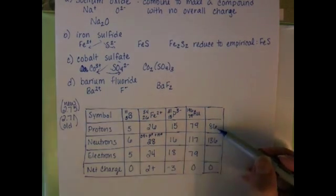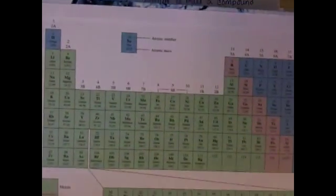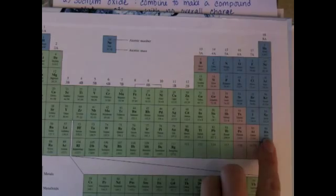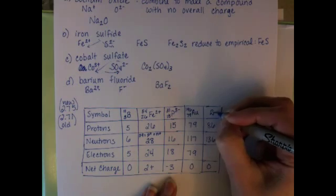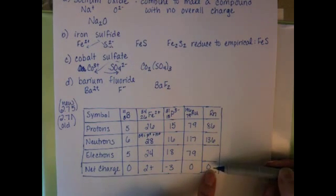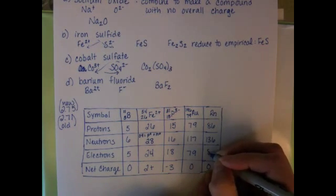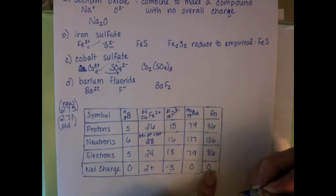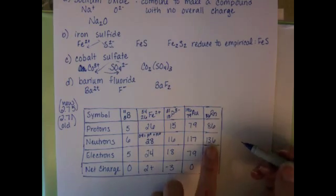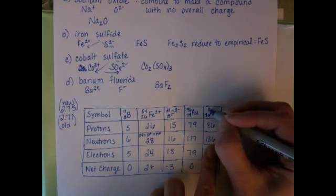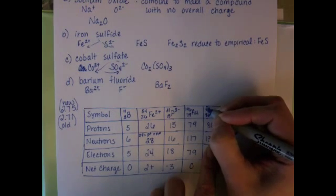And last but not least, we have 86 protons. This particular atom has a net charge of zero, which means we have equal number of protons and electrons, no charge to write into the symbol, and a mass number of 222.